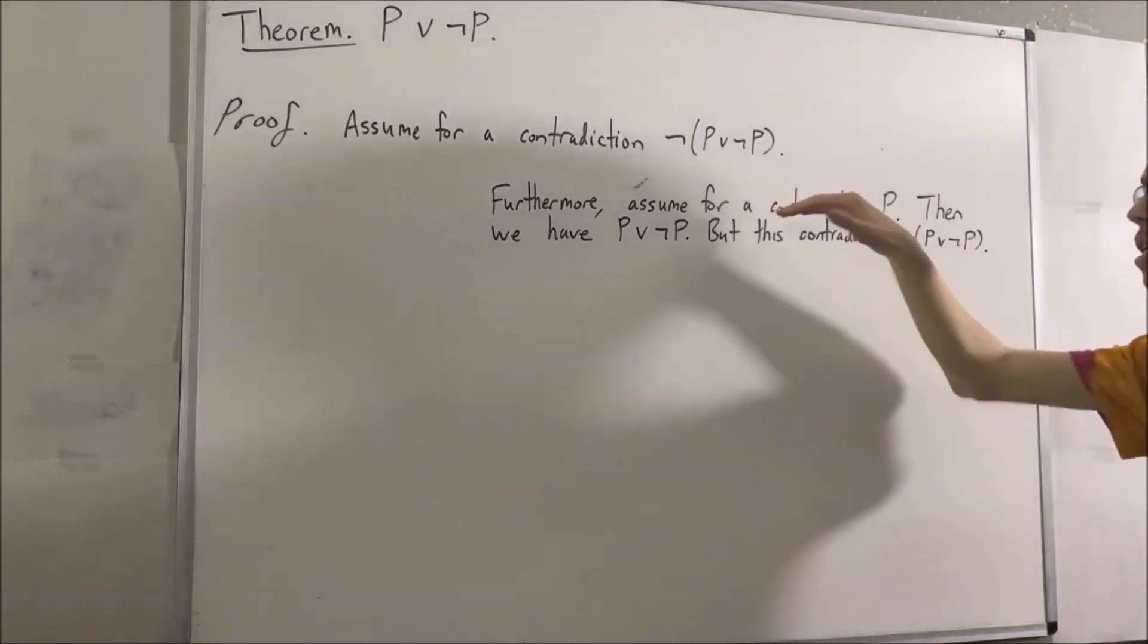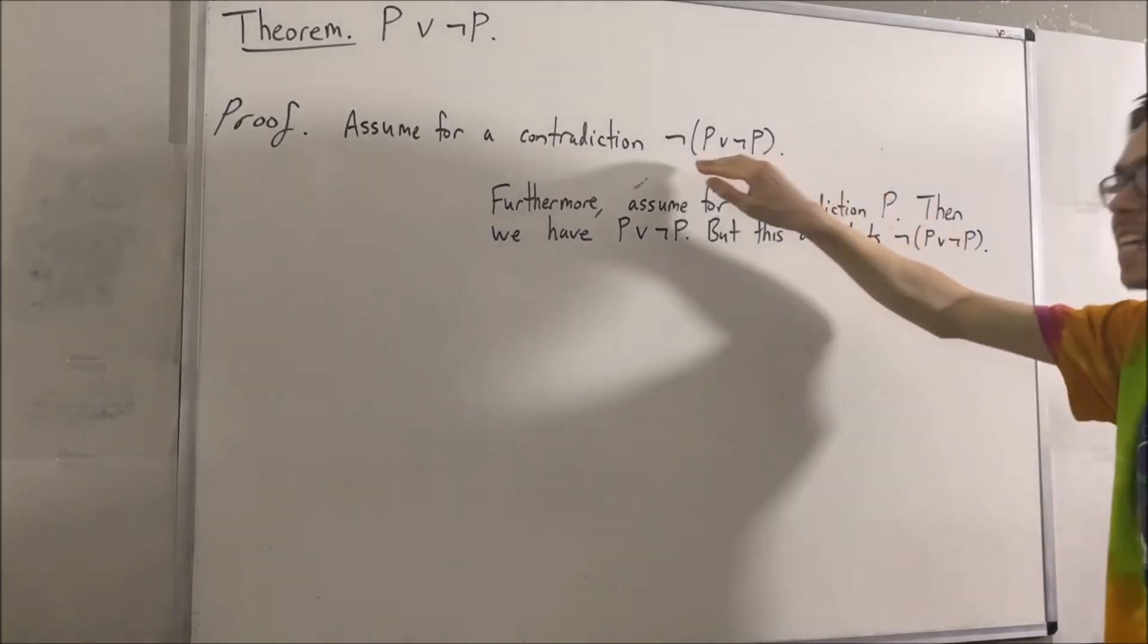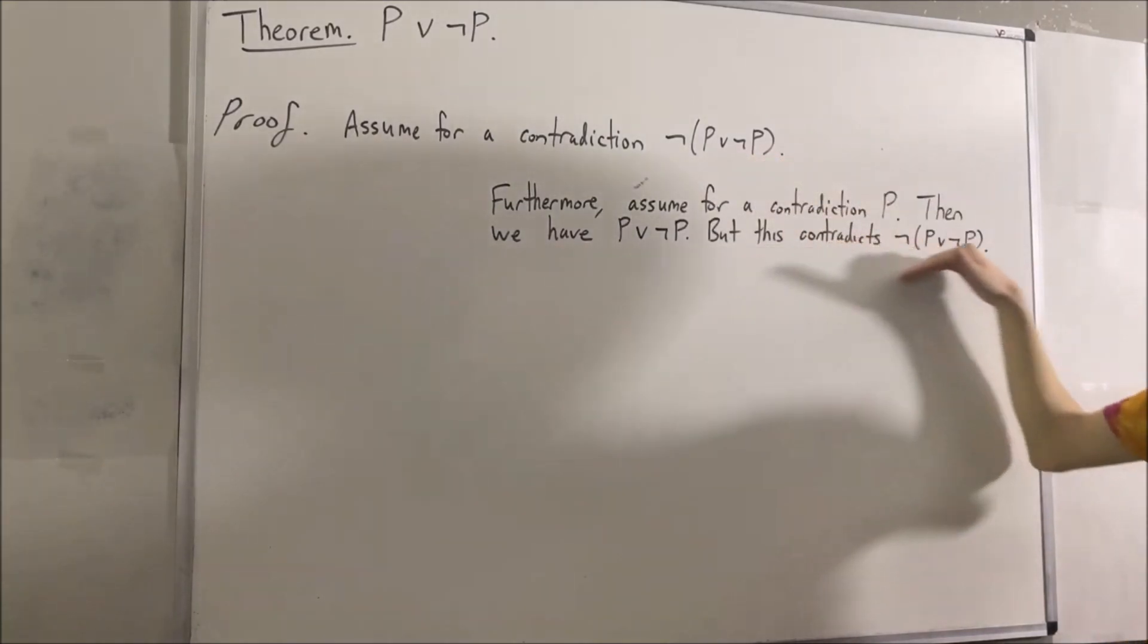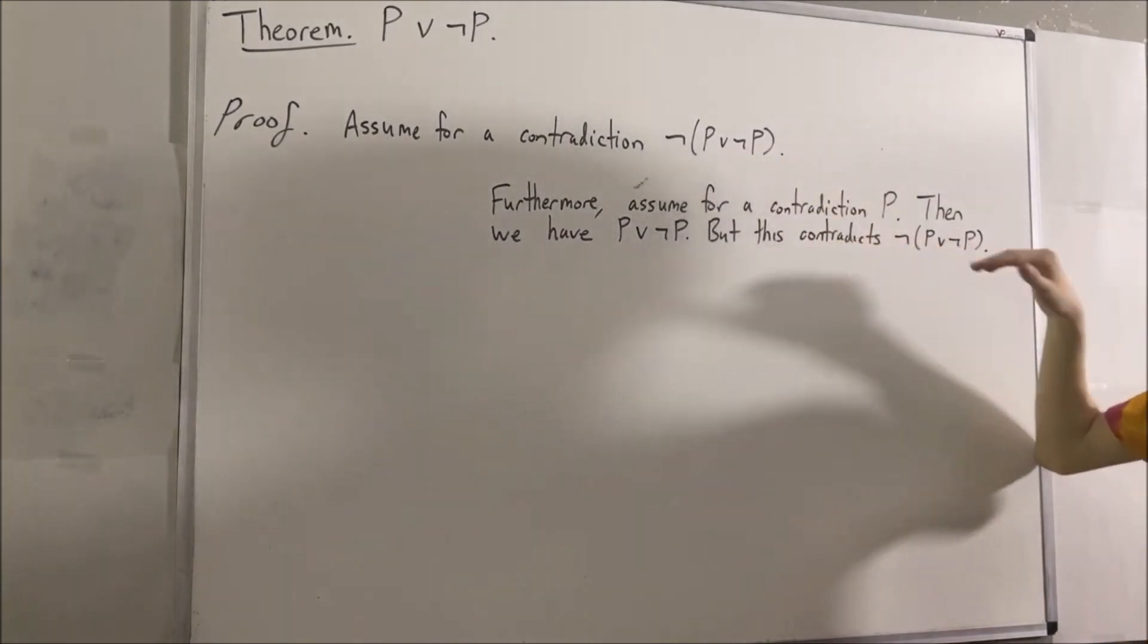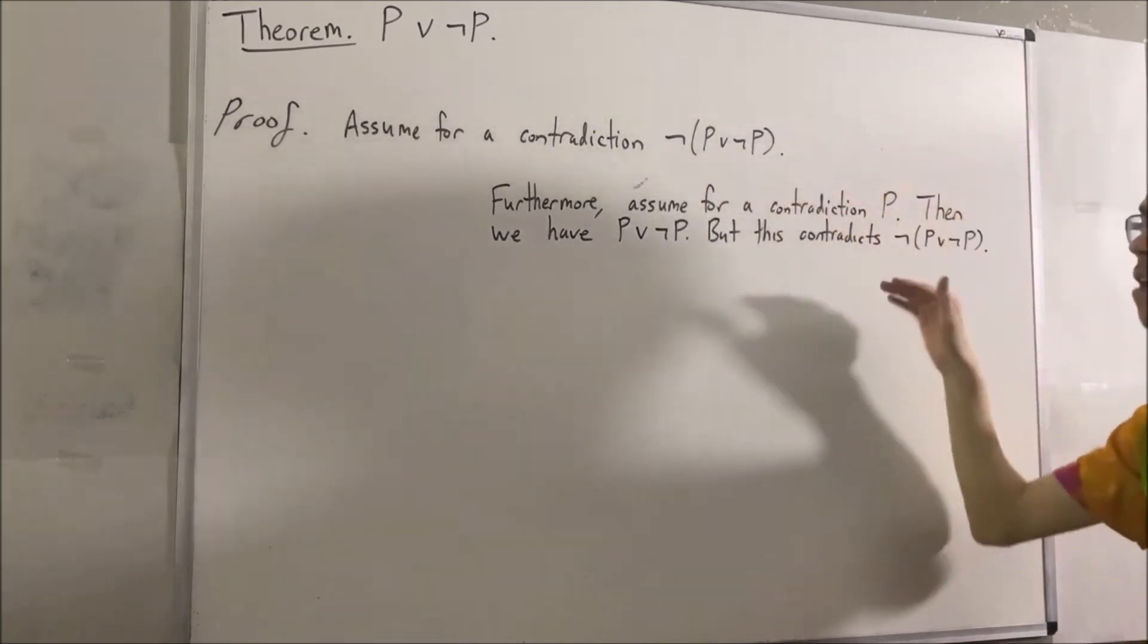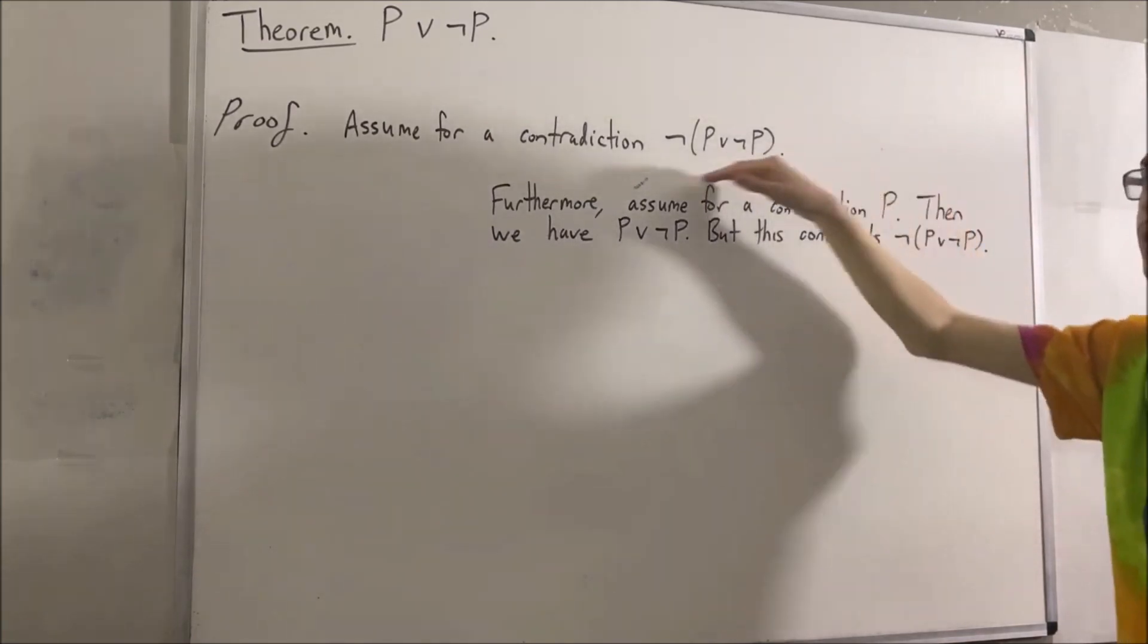So our assumption that P is true in this universe led us to a contradiction. So instead of having P true in this universe, we must have not P true in this universe.